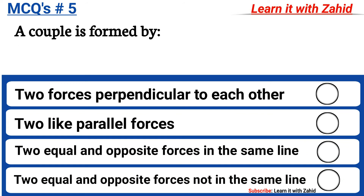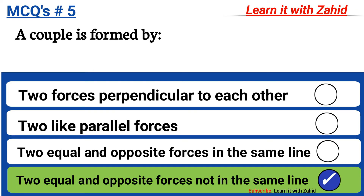A couple is formed by: option A two forces perpendicular to each other, option B two like parallel forces, option C two equal and opposite forces in the same line, option D two equal and opposite forces not in the same line. The correct answer is option D, two equal and opposite forces not in the same line.